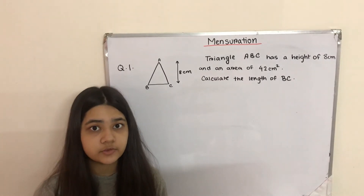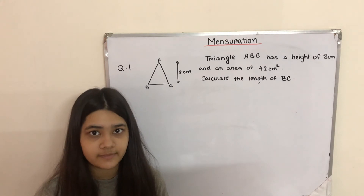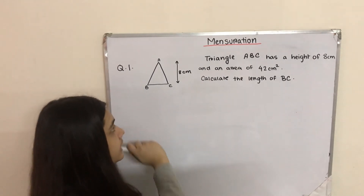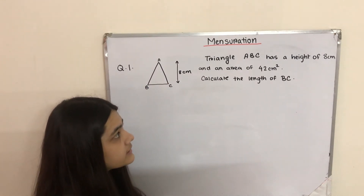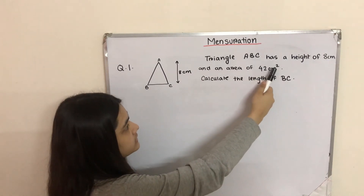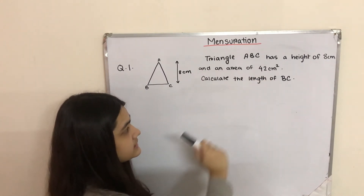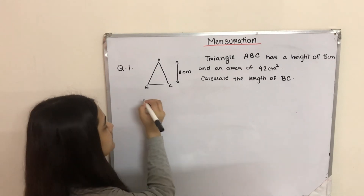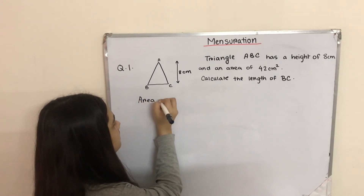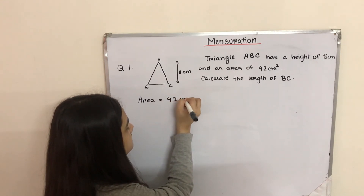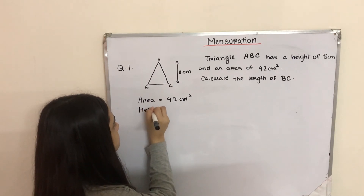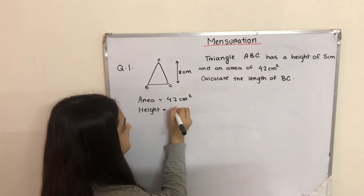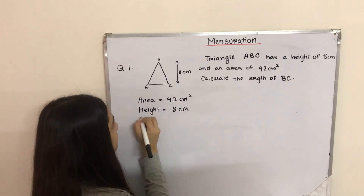So these are the four formulas we need to know if we want to find the area of triangles. Now let's solve some related questions which actually came in the O level examination. Question number one says that triangle ABC has a height of 8 centimeters and an area of 42 centimeters squared. Calculate the length of BC.